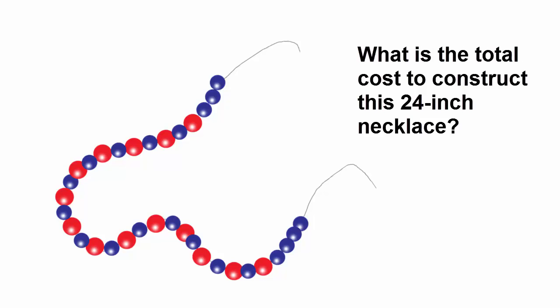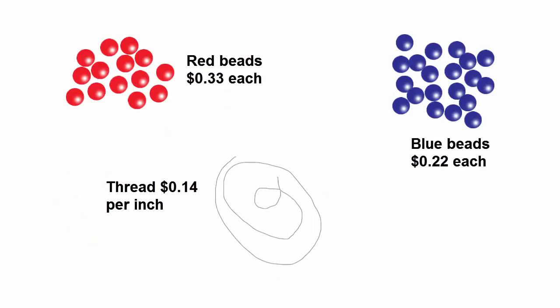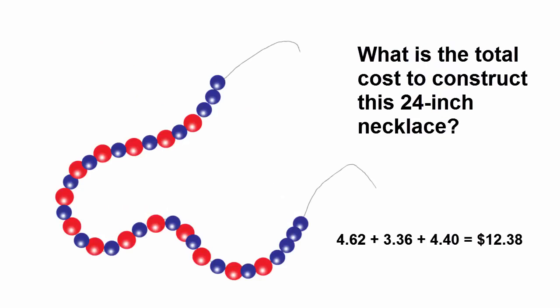Without even thinking much, you have likely already decomposed the problem into subproblems. Since the materials all have different costs and are used in different amounts, an analysis of the problem leads us to the conclusion that calculating the cost for each type of material, and then adding those answers together, is the logical way to approach the problem.